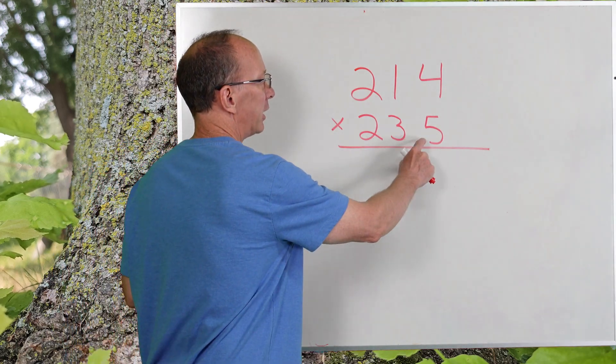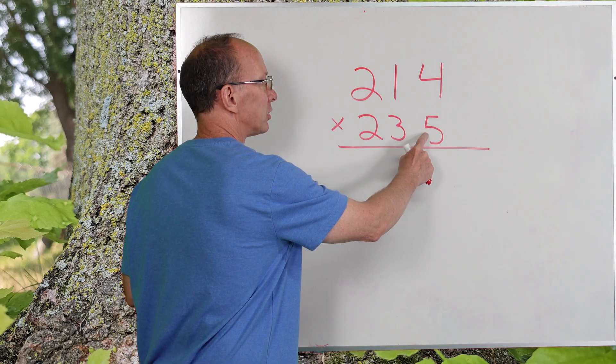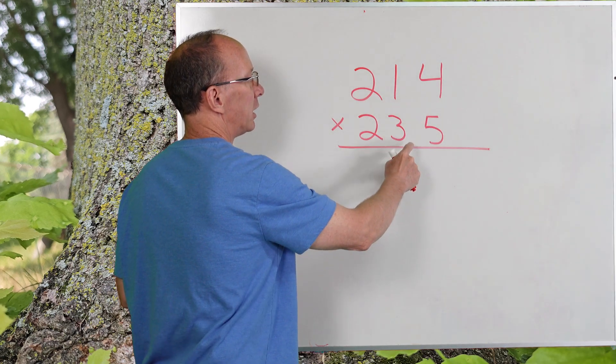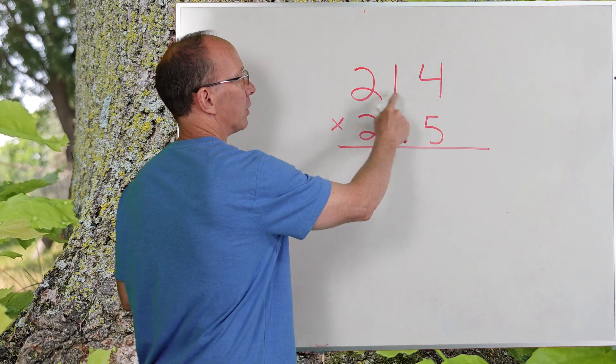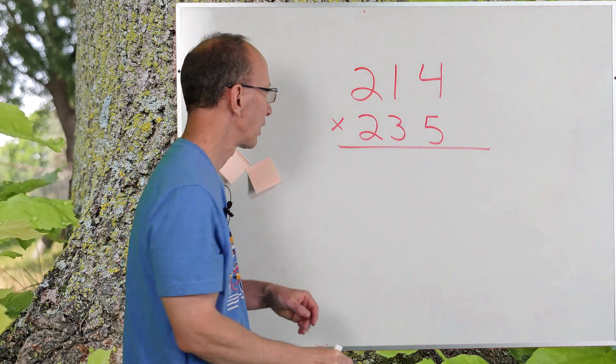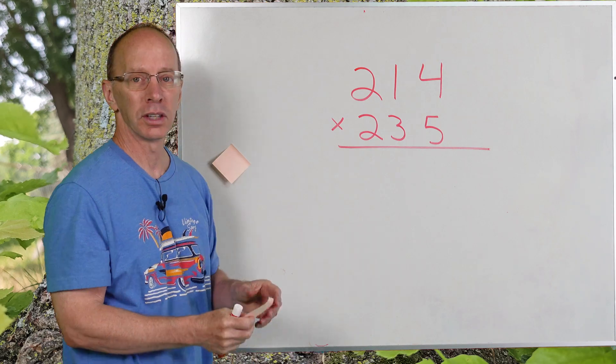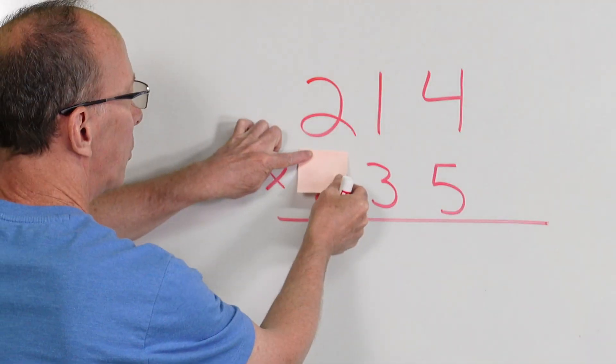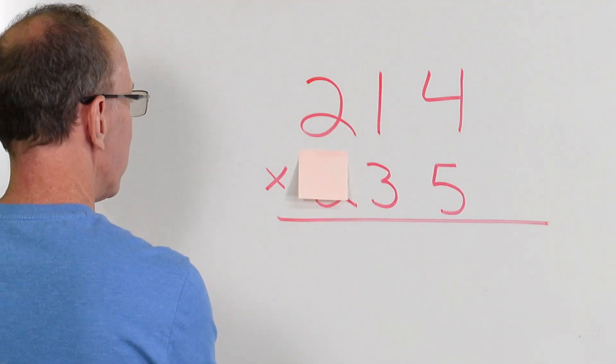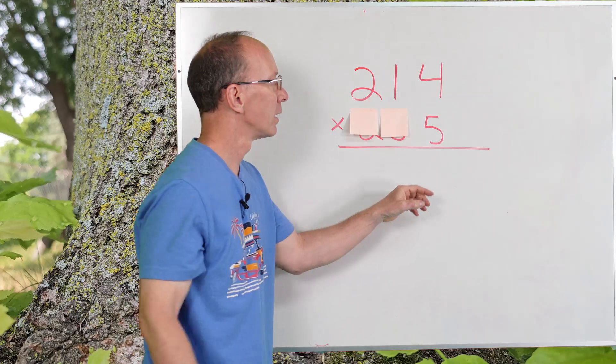Now, with these numbers right here, I'm going to be starting with the five, so five times 214, and then I'm going to take three times 214, and then two times 214. I don't need to see the two and the three right now. I'm just going to be working on the five. Let's begin.